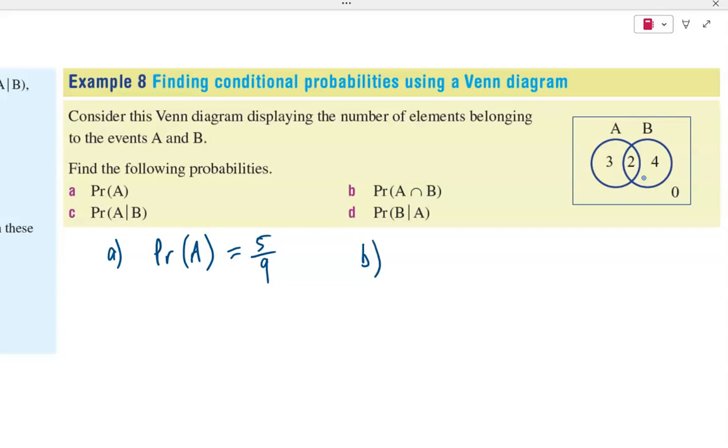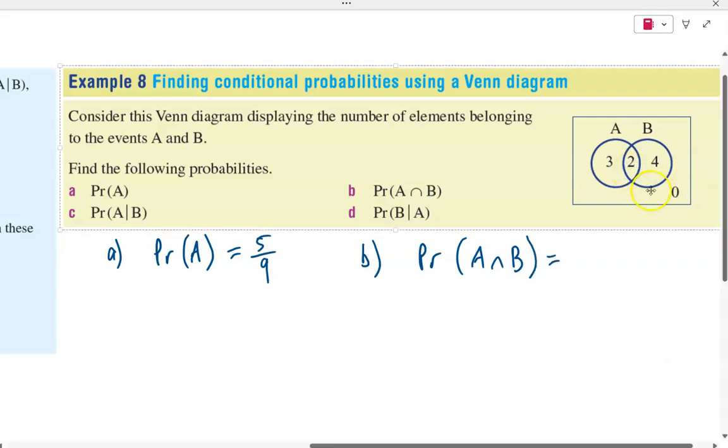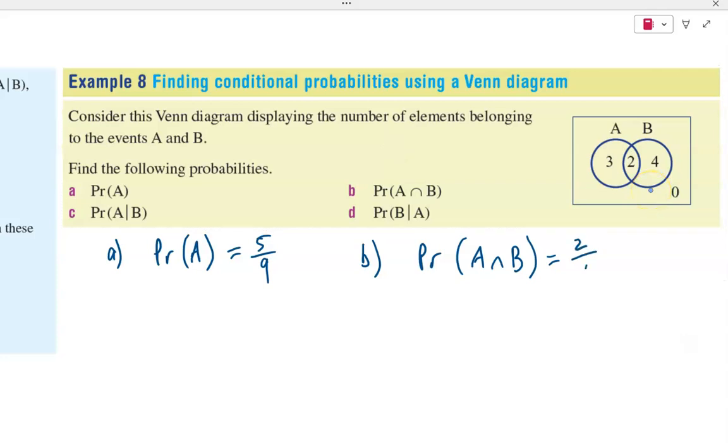For question B, it says, what is the probability of events A and B occurring? So here we're looking in the intersection. So that value is two over, again, nine.